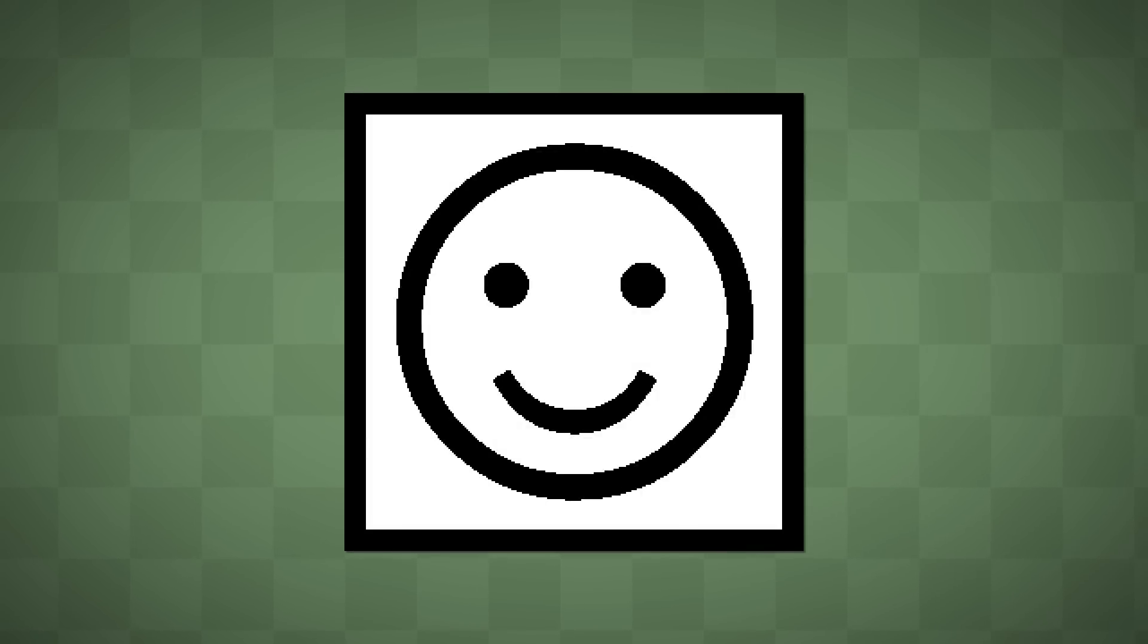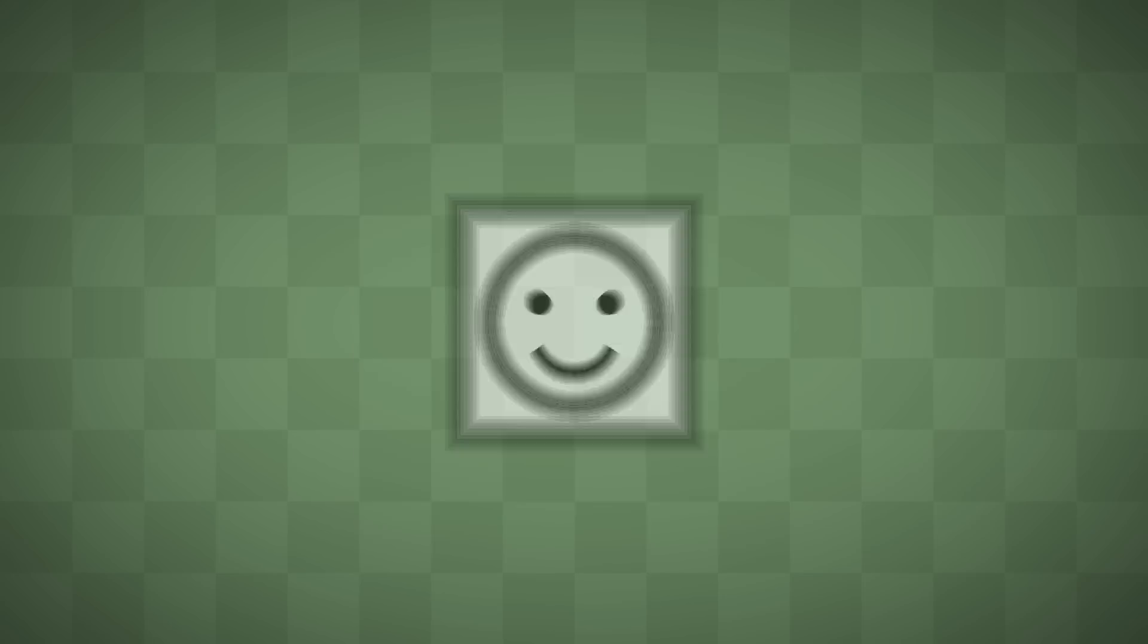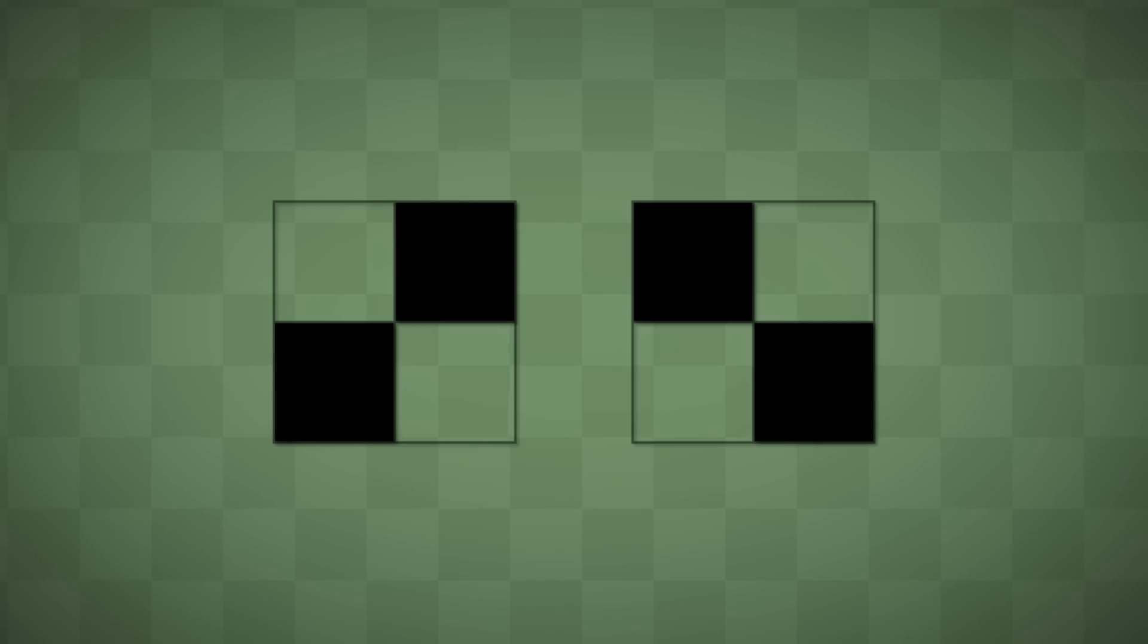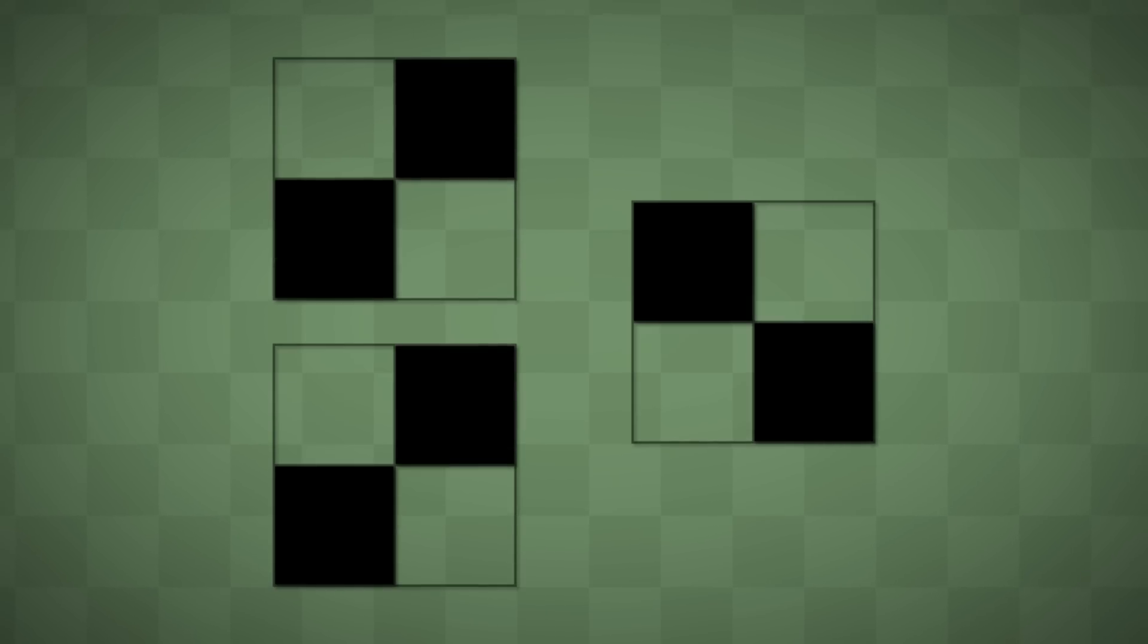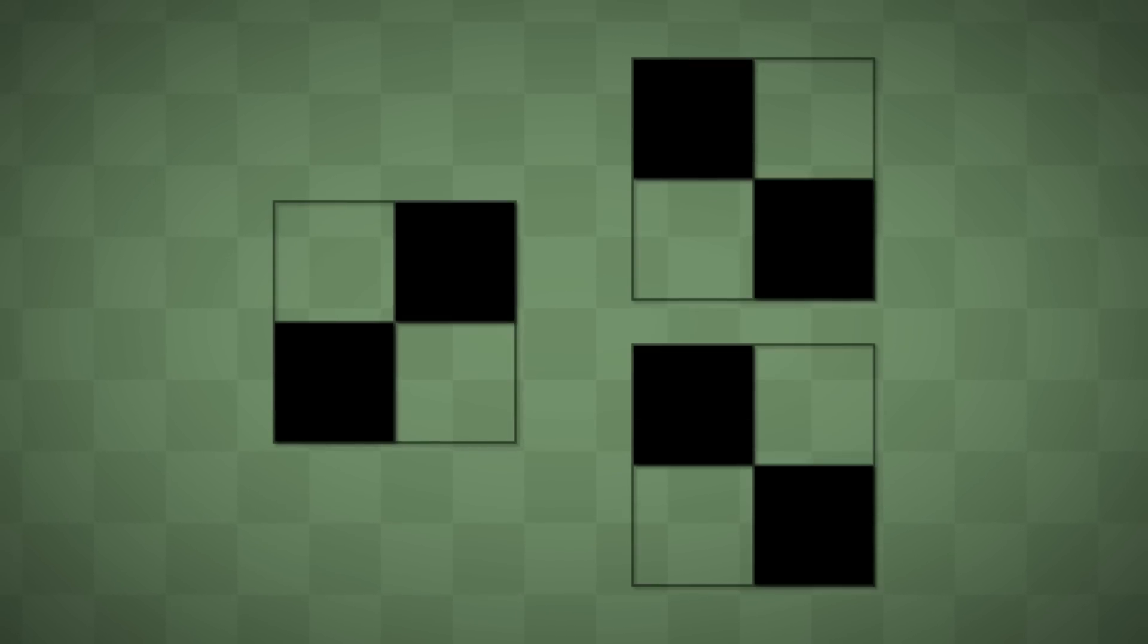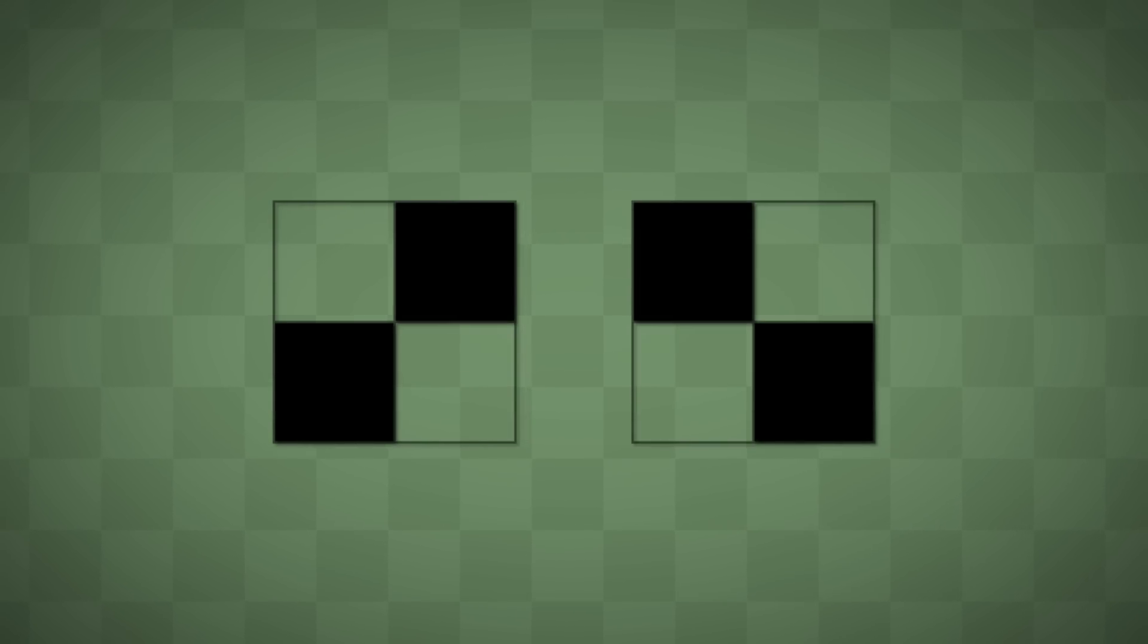When I break my image up into shares, they alone don't look like anything. But when layered atop one another, the secret image is revealed. This particular algorithm generates shares using these two simple patterns. If we layer the same pattern with itself, we can see through half of this 2x2 region. However, if we layer opposing patterns with one another, light is blocked in this region.